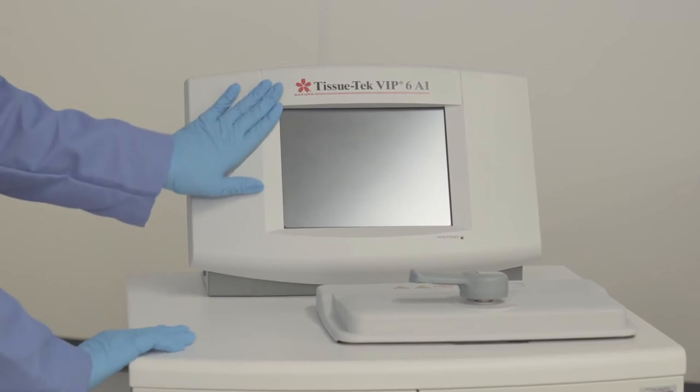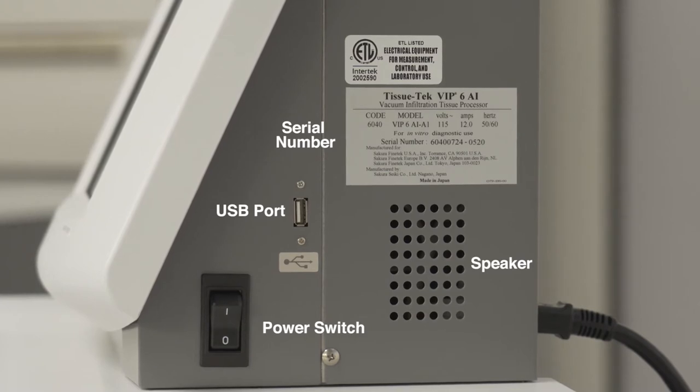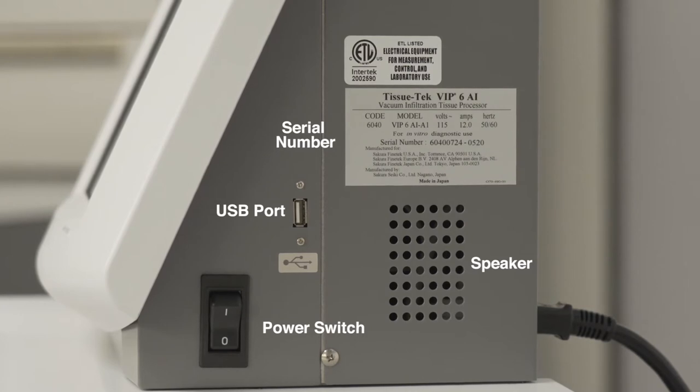The front of the unit is the LCD color touchscreen. On the right side of the control module you will find the power switch, a USB port to download data as needed, a speaker, and information on safety rating along with the serial number of your processor.